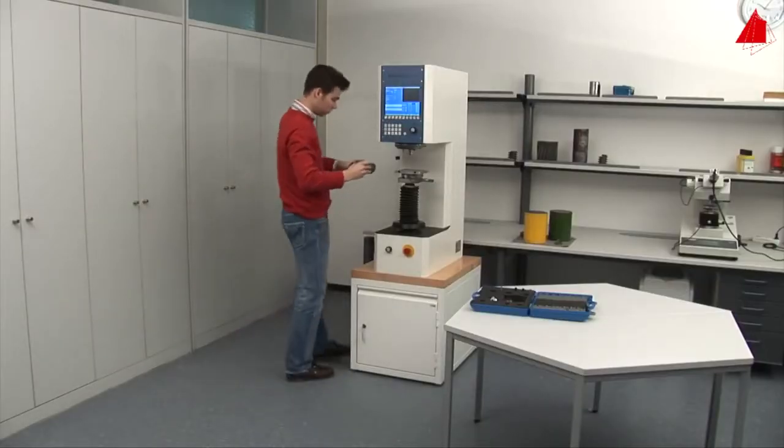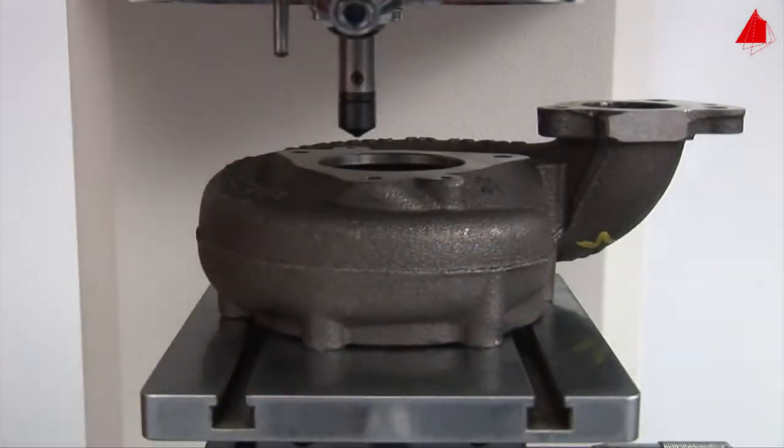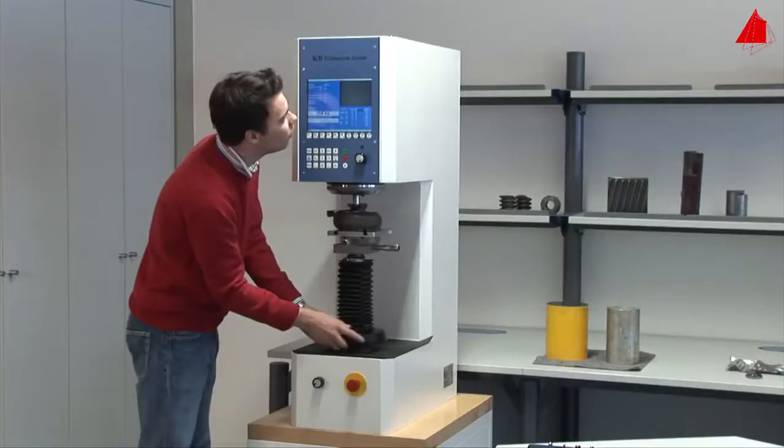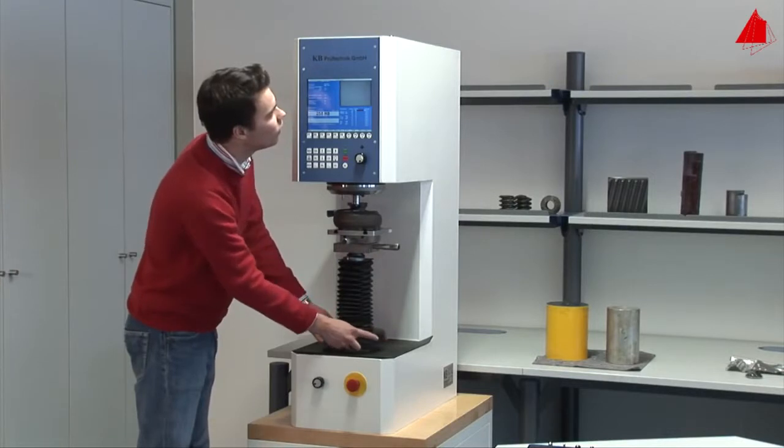Next, he puts the turbocharger housing onto the support table, rotates the microscope lens into vertical position and adjusts the correct height of the test piece.